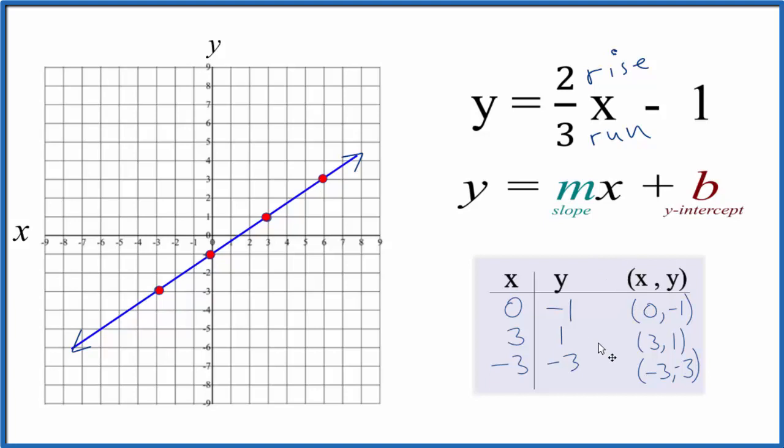So we know we did the first part correctly. This is the graph for y equals two-thirds x minus one. This is Dr. B. Thanks for watching.